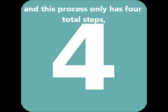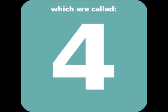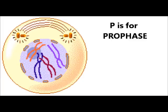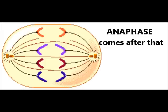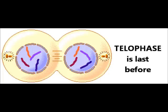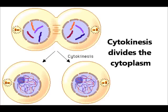And this process only has four total stages, which are called: P is for prophase, M is for metaphase, anaphase comes after that. Telophase is last before cytokinesis divides the cytoplasm.